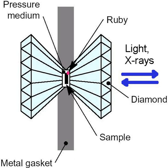Laser heating is done in a diamond anvil cell with Nd:YAG or CO2 lasers to achieve temperatures above 6000 K. Spectroscopy is used to measure black body radiation from the sample to determine the temperature.